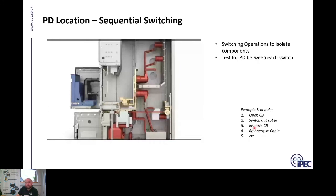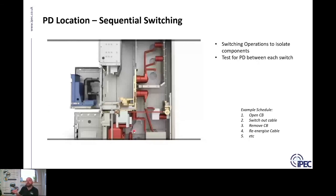The next step may be to remove the circuit breaker if the PD is still present, and then re-energize the cable. If the PD is no longer occurring, it's most likely that the partial discharge is inside the circuit breaker. Depending on the switchgear type and network configuration, plan a switching schedule — switch out different components, isolate them, and test for PD between each test. This is the most effective way to isolate the component most likely to be the source of PD before taking it offline.